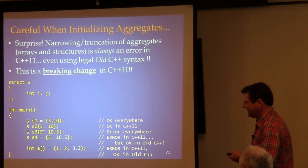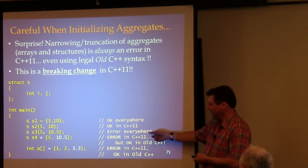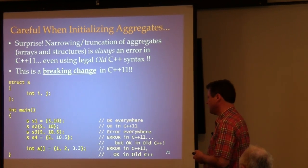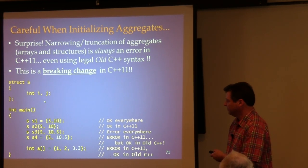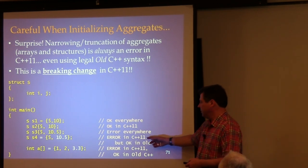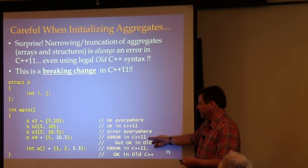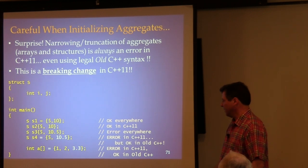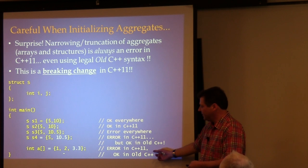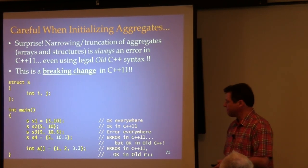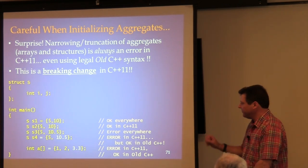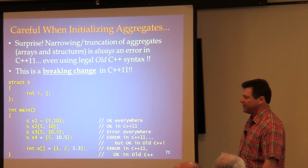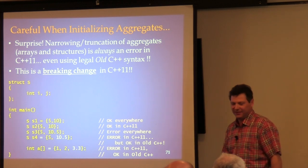In C++98, that initialization with braces requires the equal sign, and missing it is an error. In new C++, omitting the equal sign is okay, but providing a narrowing value is an error. Old C++ lets you truncate and narrow to your heart's content. Collectively, this feature is a good thing, though in edge cases things get confusing. The price of freedom is eternal vigilance.